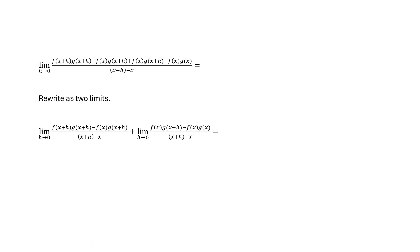So we now have two limits. The first is the limit of f of x plus h times g of x plus h, minus f of x times g of x plus h, over x plus h minus x.